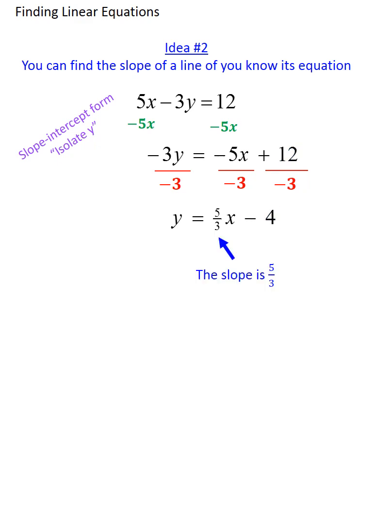But now that I've put my equation in what's called slope-intercept form, in other words, now that I've isolated y, the coefficient of x is the slope of the line.